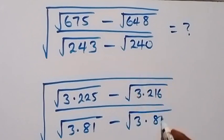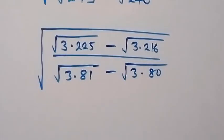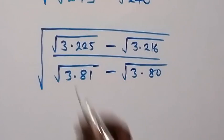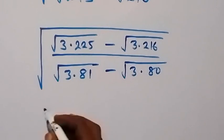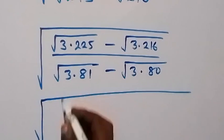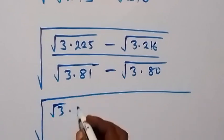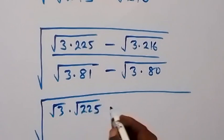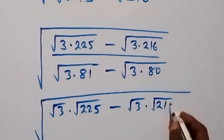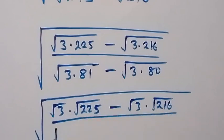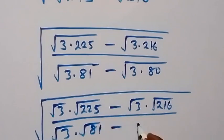And we can write that as root 3 times 80. From the law of roots we can separate each term into two roots. This becomes square root of: up here we have root 3 times root 225, minus root 3 times root 216. Also in the denominator we have root 3 times root 81, then minus root 3 times root 80.